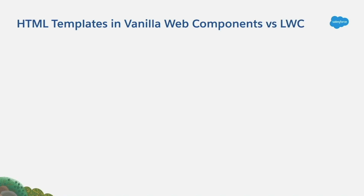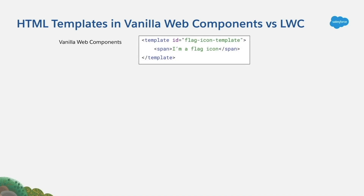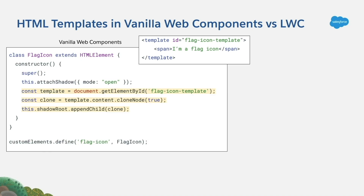Now, how do you use HTML templates in vanilla web components? Well, if we follow with the example that we did before, what we can do is, instead of creating the HTML content dynamically in the constructor, we can create a reusable HTML template. Then, what we will have to do is to retrieve the template, clone it, and append it to the shadow root. Very easy again.